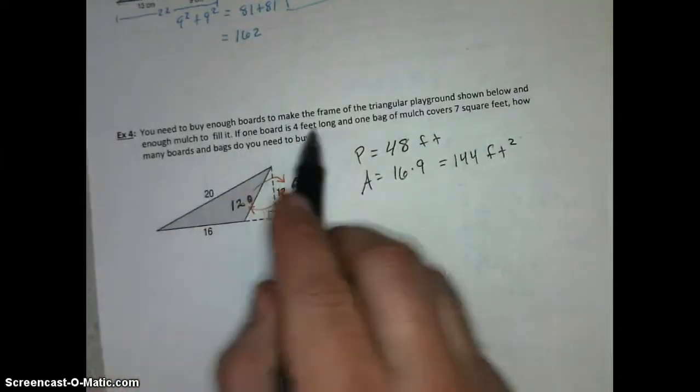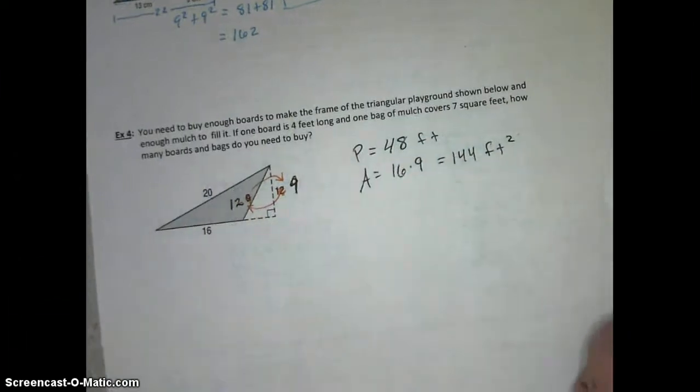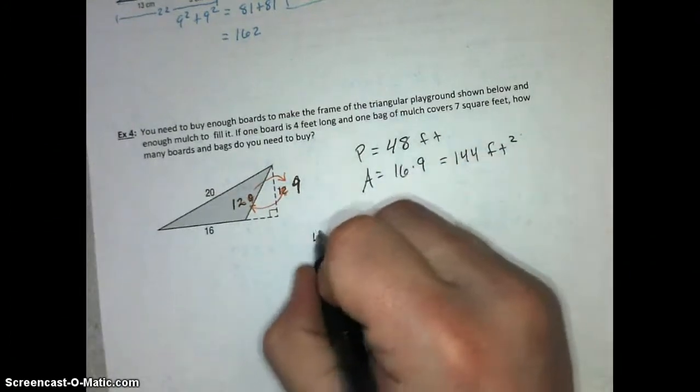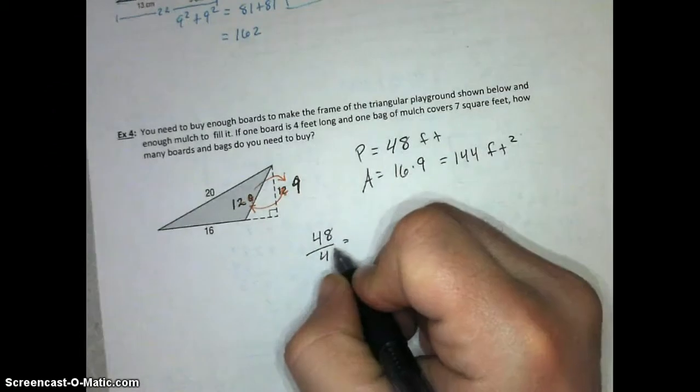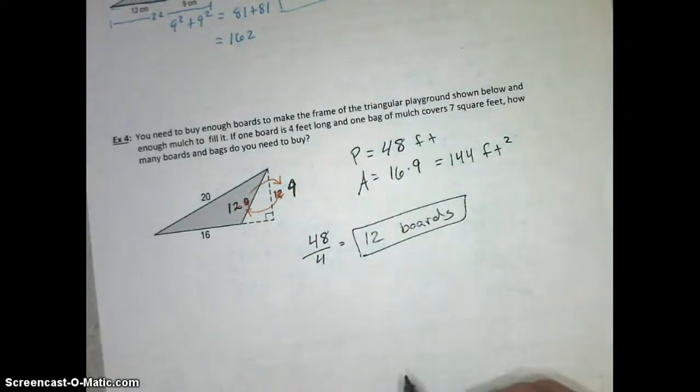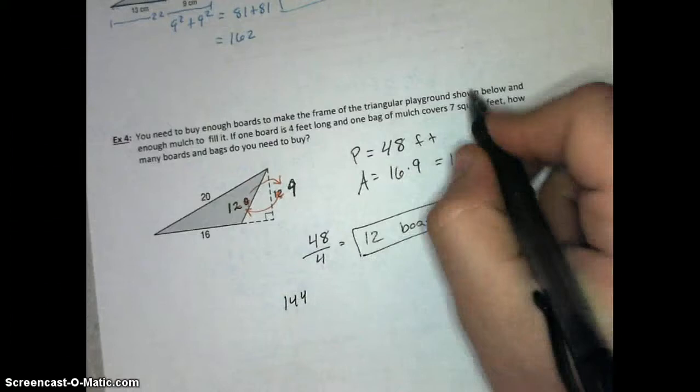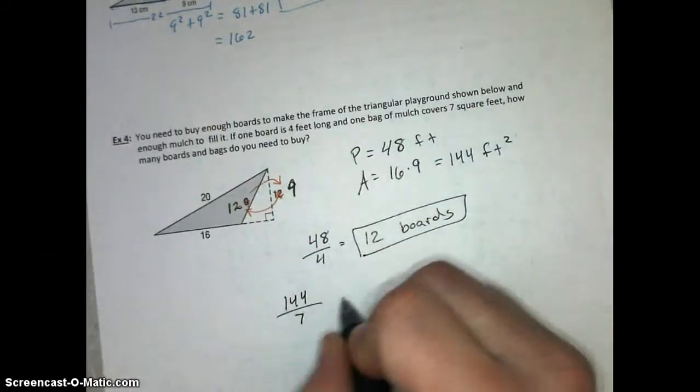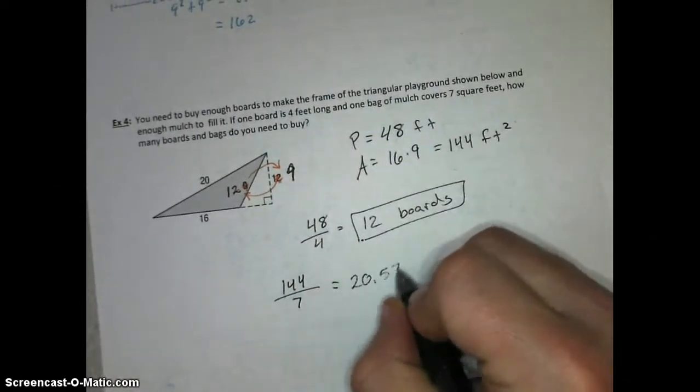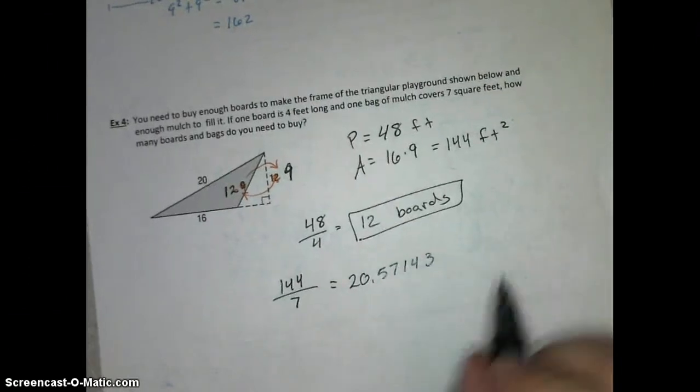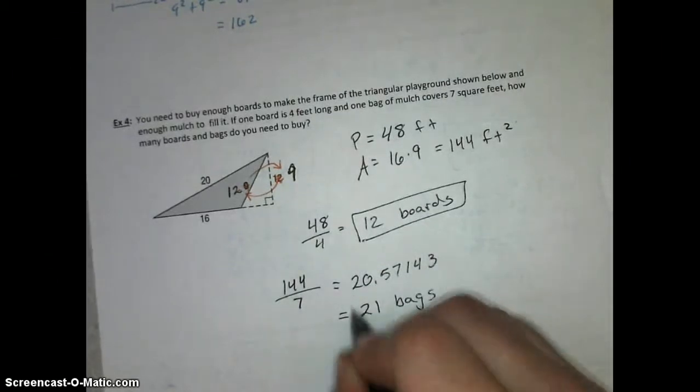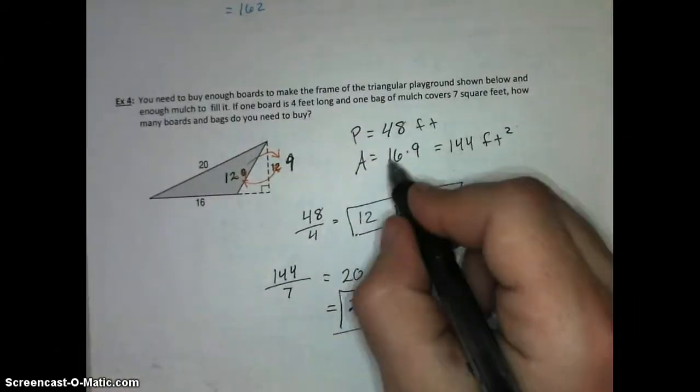So this is what the problem is asking you to find, though. If one board is 5 feet long and one bag of mulch covers 7 square feet, how many boards, how many bags of mulch do you need? And so we have 48 linear feet, and they come in 4 feet long boards. So all we have to do is take our 48 and divide it by 4. And that tells us we need 12 boards. And then we're going to take our square footage, 144, and it covers 7 square feet per bag. So we're just going to take that and divide by 7. And we get approximately 20.57143. But since I need more than 20 bags, I have to go ahead and purchase the 21st bag. And so that's how we find those answers, based on this perimeter and this area.